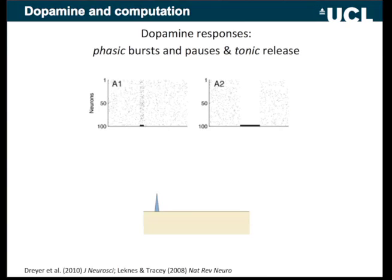Turning to striatal dopamine: as Rob outlined yesterday, this is a raster plot of dopaminergic neurons ticking away at tonic firing. Then some stimuli are applied and there's a phasic burst firing; with a different stimulus, there's a phasic pause. So you have this tonic level, these phasic bursts, and these phasic pauses.